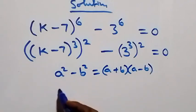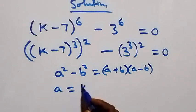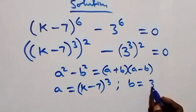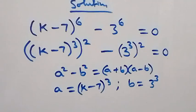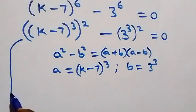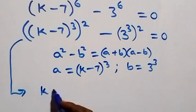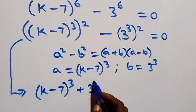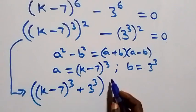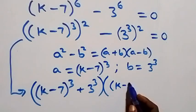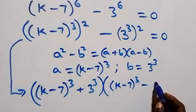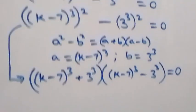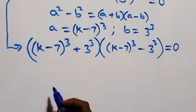Here a is the same as k minus 7 raised to power 3, and b is the same as 3 raised to power 3. So what we have becomes: k minus 7 raised to power 3 plus 3 raised to power 3, into bracket, times k minus 7 raised to power 3 minus 3 raised to power 3, equals zero. This implies two cases.